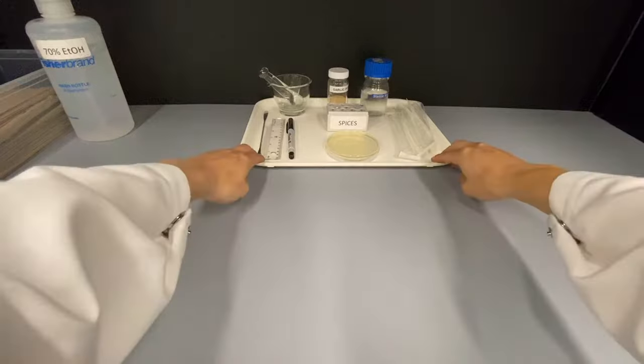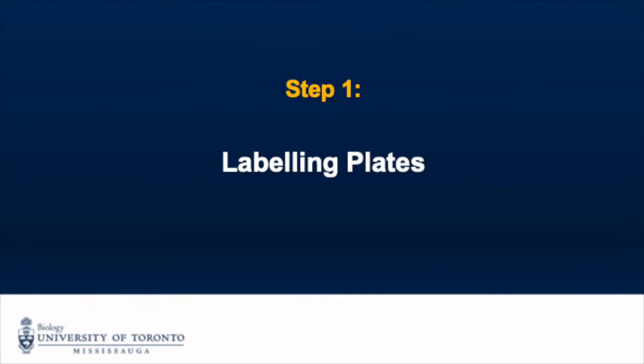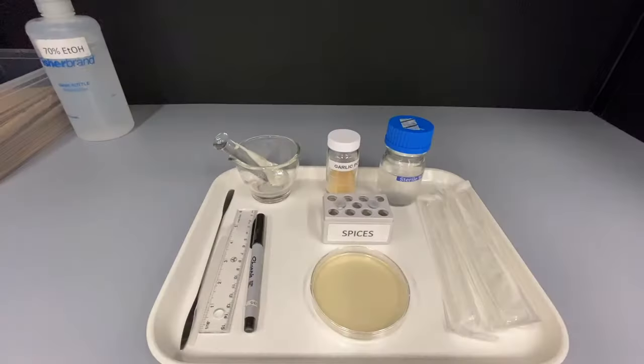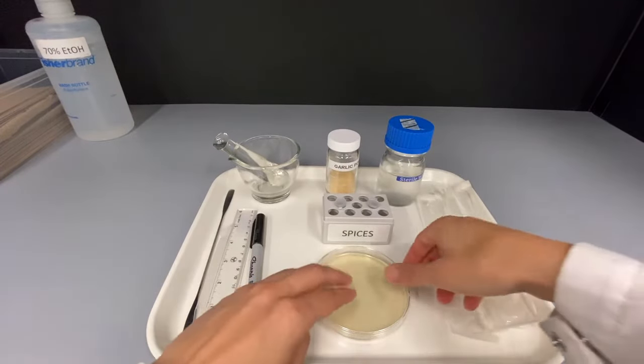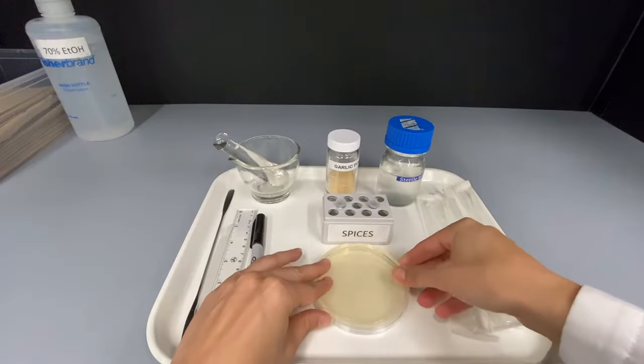You will start with the materials from tray 1. The first step is to label the agar plate. Your plate has two sides, the bottom side containing the agar and the lid. You want to label the bottom side.